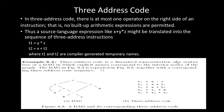Now we discuss three-address code, which is required for generation of intermediate representation. In three-address code, there is at most one operator on the right-hand side of an instruction. For example, the source language expression x + y*z might be translated into a sequence of three-address instructions: first evaluate y*z and store the result in T1 — T1 is a temporary name generated by the compiler — then compute x + T1 and store the result in T2.